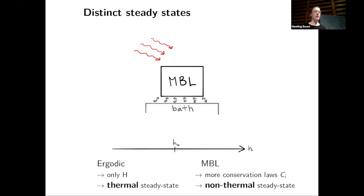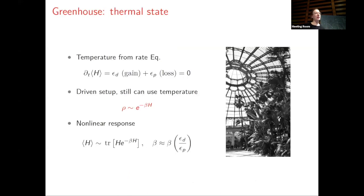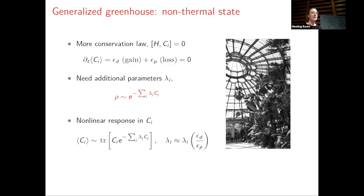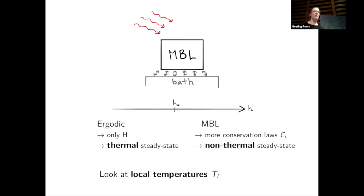To get intuition for why one gets a thermal state on the ergodic side, one can think of a greenhouse: a system with one approximate conservation law — energy — in contact with the environment through windows and driven by the sun. We all know that the state stabilized is a thermal one with a temperature determined by one rate equation for energy. When there are more conservation laws on the MBL side, I have macroscopically many rate equations and need more parameters to characterize the steady state, and the state satisfying all those rate equations will not be a thermal one.